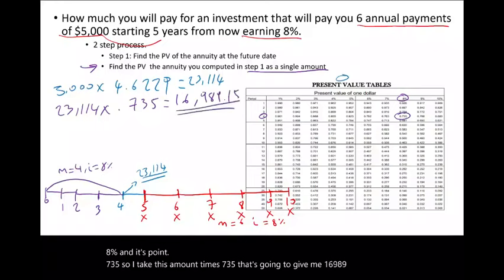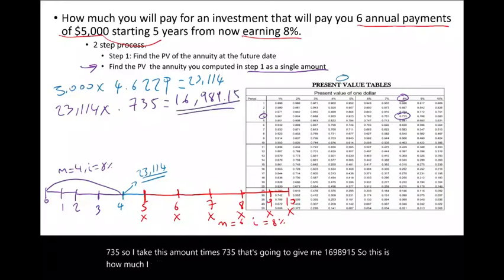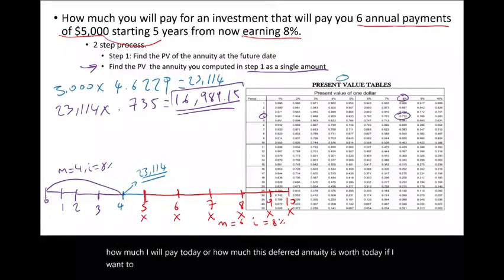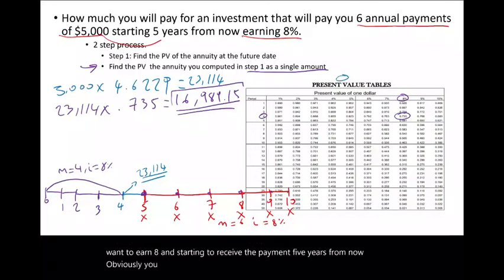So $16,989 is how much you will pay today, or how much this deferred annuity is worth today, if you want to earn 8% and start receiving payments five years from now. That's one way of computing the deferred annuity.